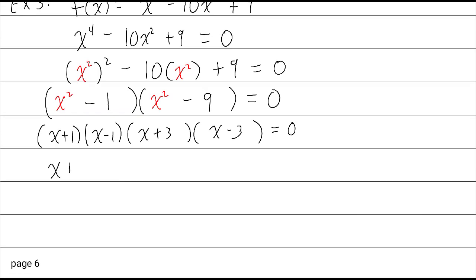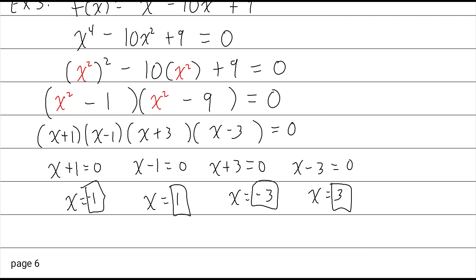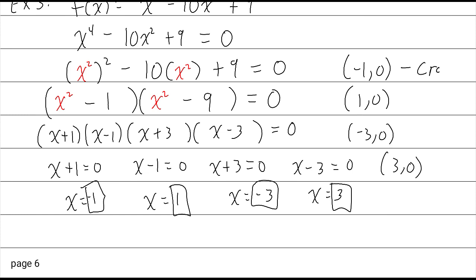Setting all factors equal to 0 using the zero product property gives four individual equations and four unique solutions. Since they're all multiplicity 1, the graph will cross the x-axis at each of the four x-intercepts: (-1, 0), (1, 0), (-3, 0), and (3, 0).